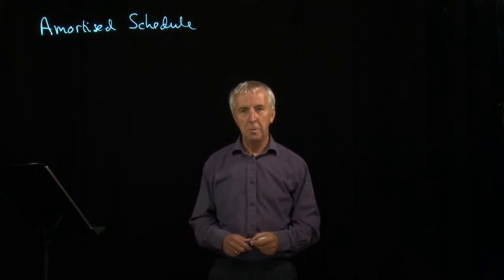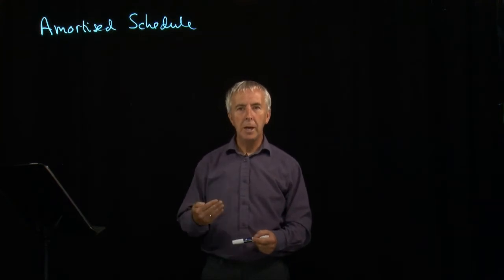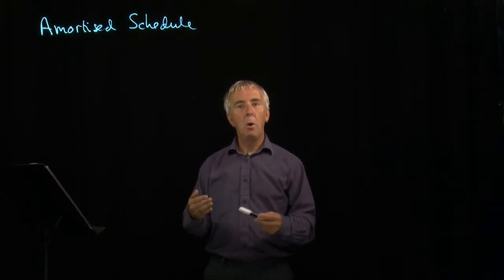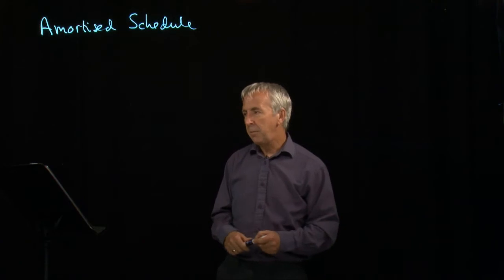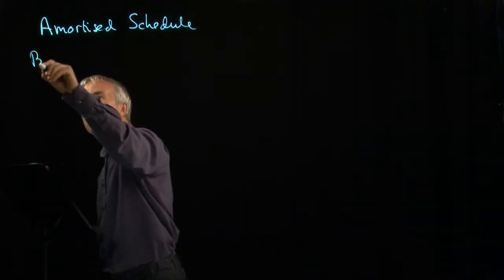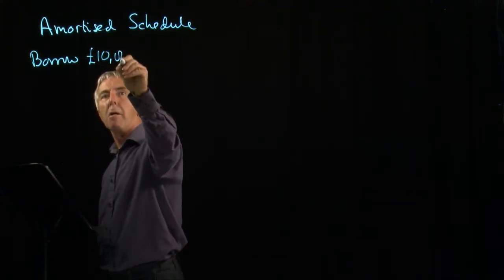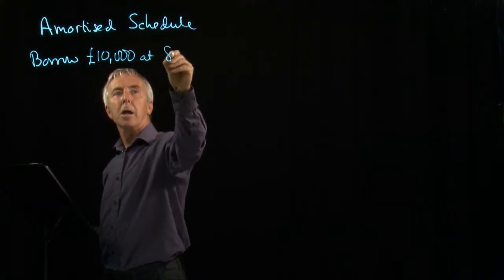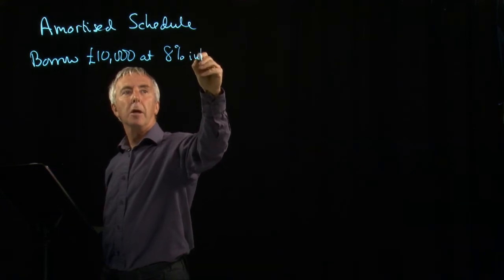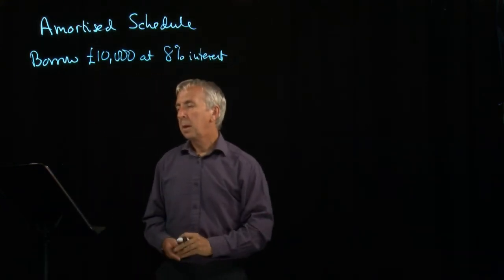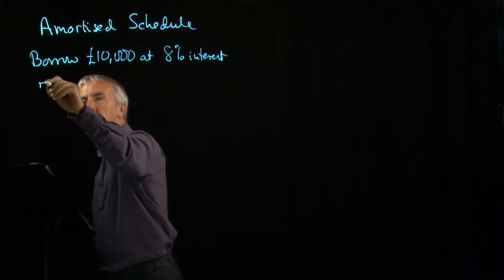We can use ideas of interest to work out how much we pay back when we repay a loan. Because when you take a long-term loan out, you're paying interest each year on what's still left to repay. You repay some each year, but what's left still incurs interest. So let's suppose we borrow £10,000 at 8% interest, and we repay £2,000 each year.